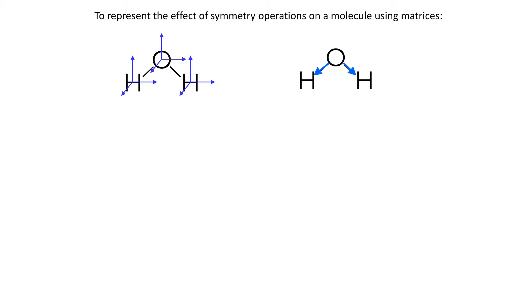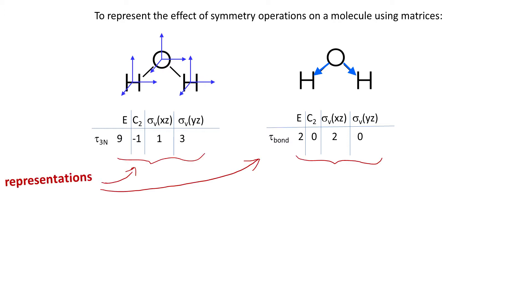Regardless of what set of vectors or functions we use, we will get series of numbers. This series of numbers is called representation because it's a numerical way of representing the effect of symmetry operations on a molecule. We will be doing this in future videos and I promise you, you will find it super easy, trust me.